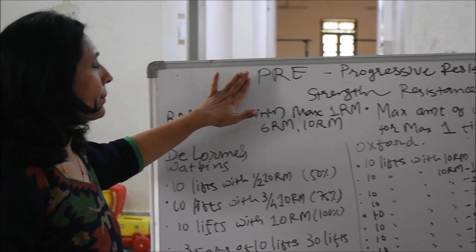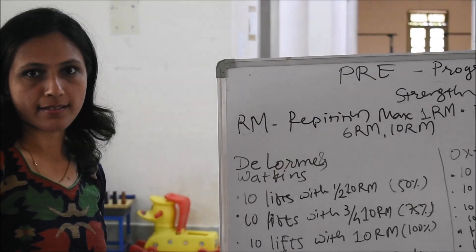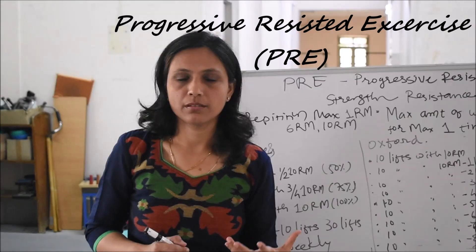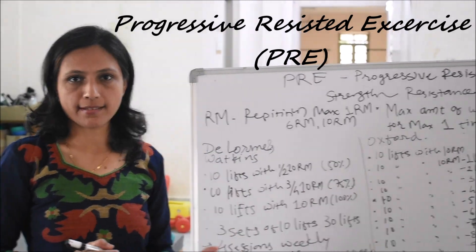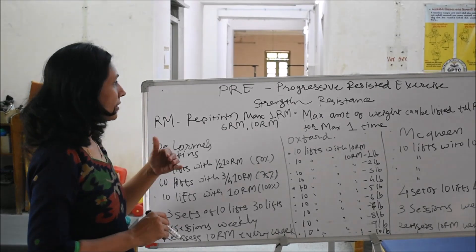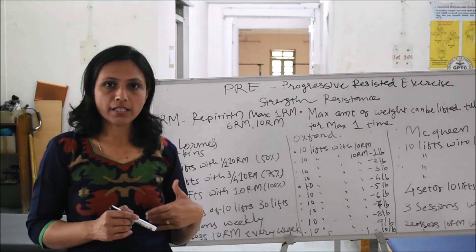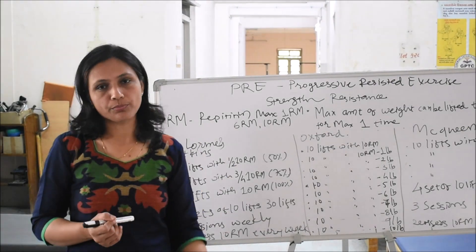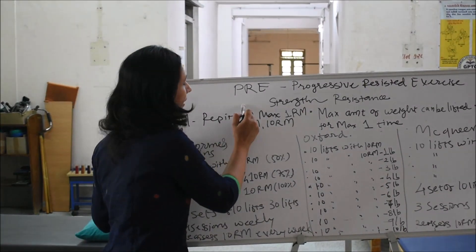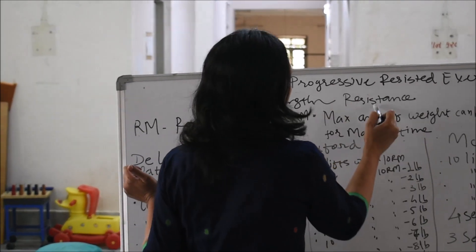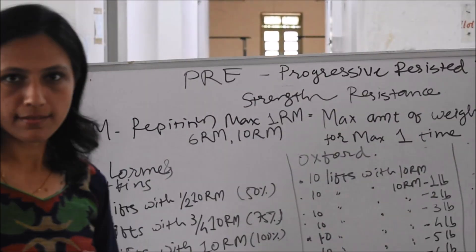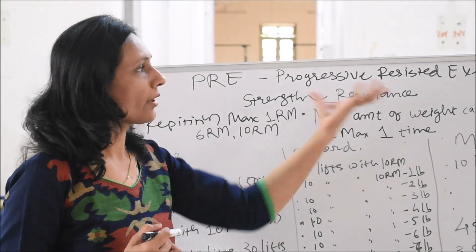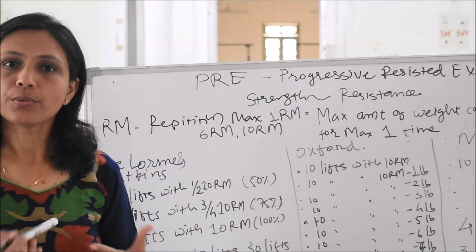Now we will discuss progressive resistance exercise. We know that we develop a skill for whichever movement or exercise we are doing daily, so there is a need to increase the resistance we give to a particular movement when we are training that muscle. Increase in strength is directly proportional to the applied resistance — how much strength you gain depends on how much resistance you apply.